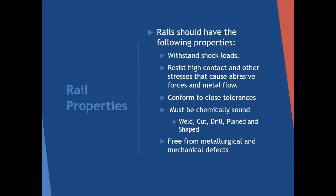Rail properties: rails should have the following properties. They should withstand shock loads, resist high contact stresses and abrasive forces and metal flow, conform to close tolerances with no deviation, be chemically sound so you can weld, cut, and drill them, be planed and shaped, and be free from metallurgical and mechanical defects - no rust and that type of thing.